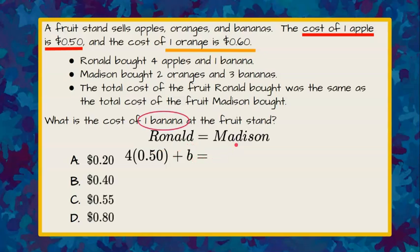Now we're going to Madison. Madison bought two oranges and three bananas. So Madison bought two times 60 cents plus three bananas.